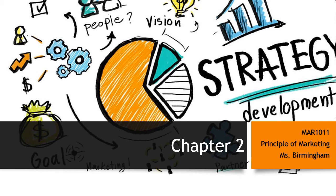Our last lecture looked at how we created customer value and engagement and gave an overview of the marketing principles in a big general environment. This chapter is going to look more at a company level and how we build this customer engagement and how a company begins to make decisions on their marketing processes.